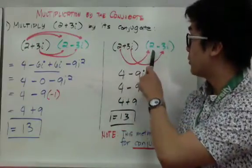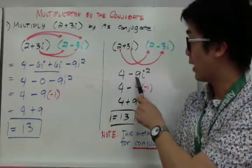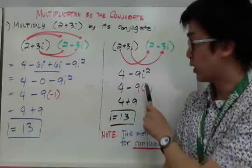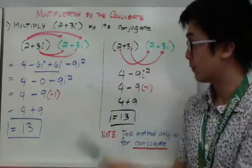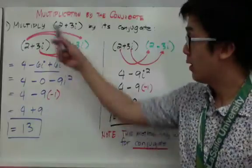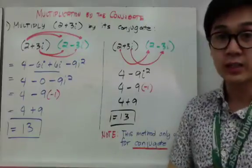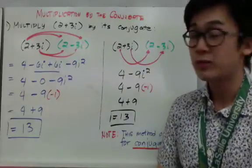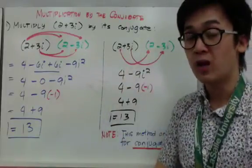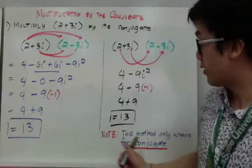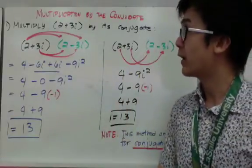If I multiply the real parts: two times two gives four. For the imaginary parts: three i times negative three i gives negative nine i squared, and since i squared equals negative one, that becomes positive nine. So four plus nine equals 13 — the same answer as FOILing. Take note that this method only works for conjugates; you cannot use it when multiplying a complex number by a different complex number.